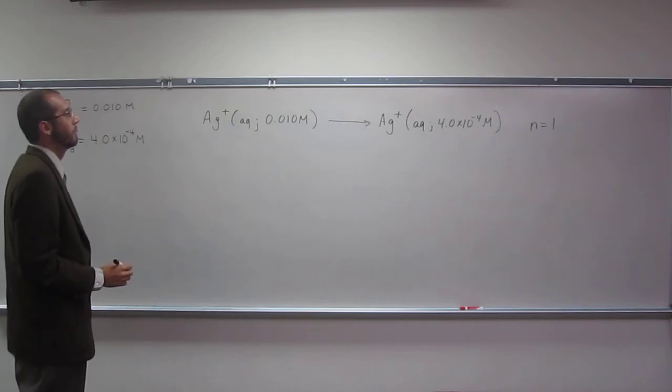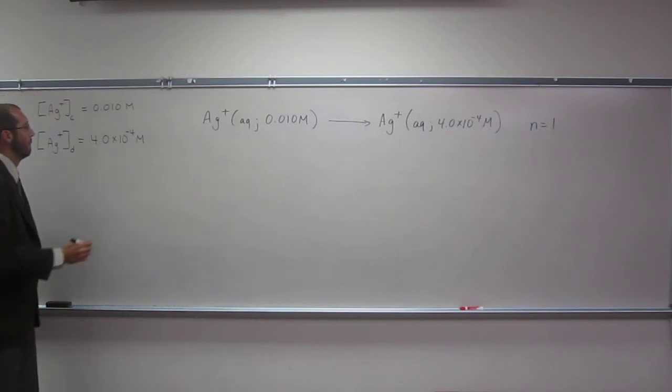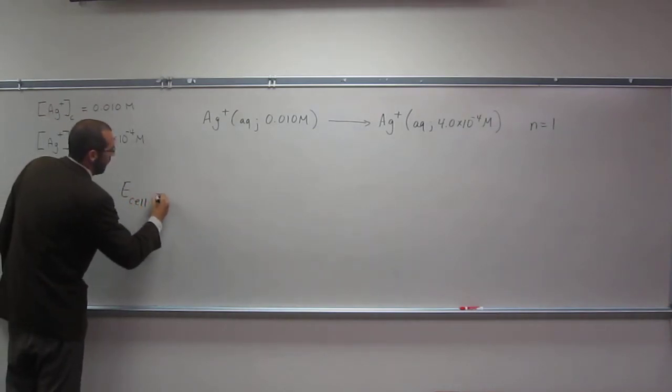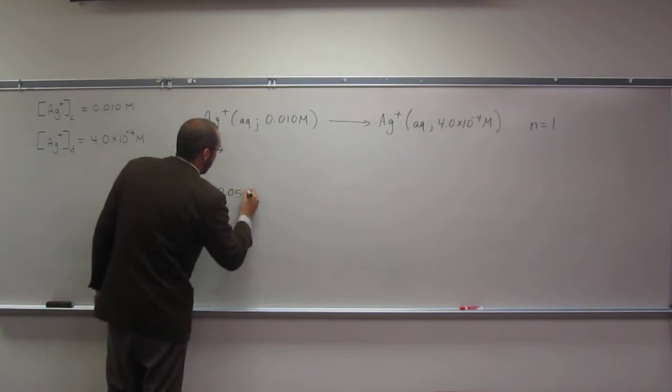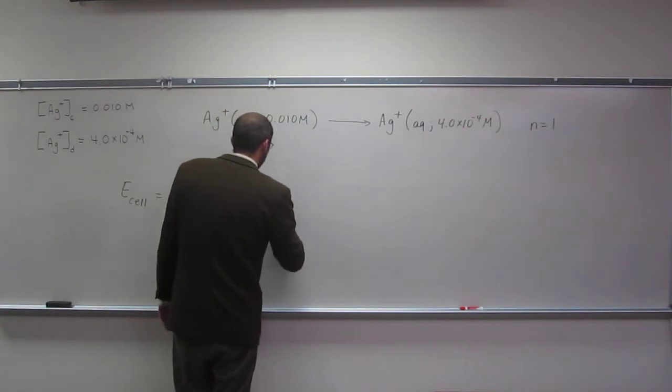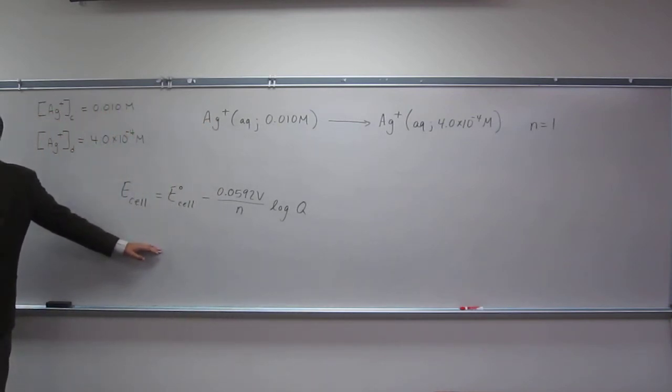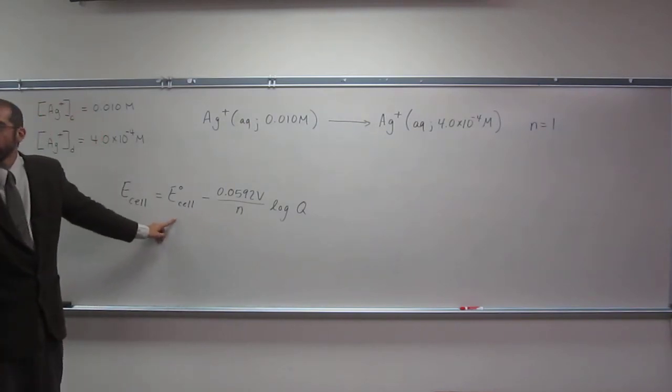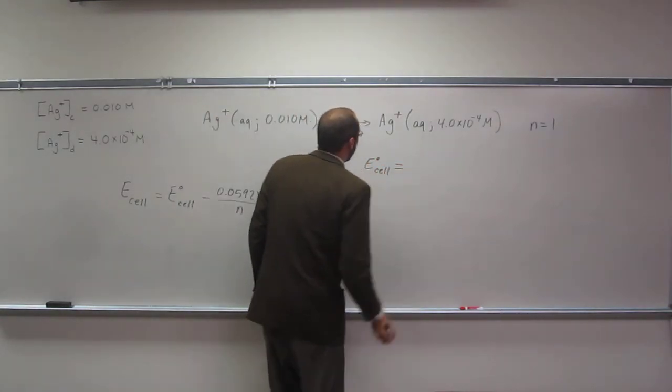So, let's write the Nernst equation because that tells us what the cell potential is. So, E cell... Is that the Nernst equation? Okay. So do we have N, well, what about the standard cell potential? So let's think about that.